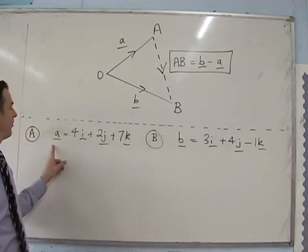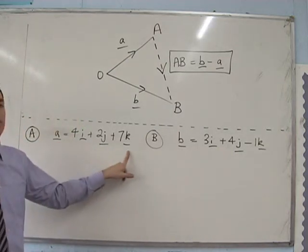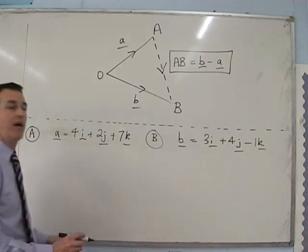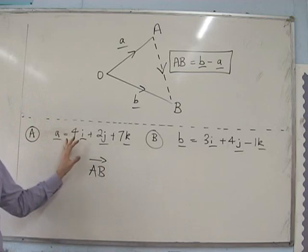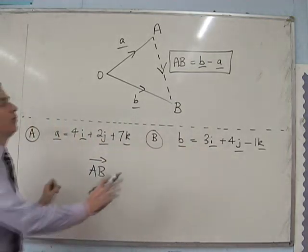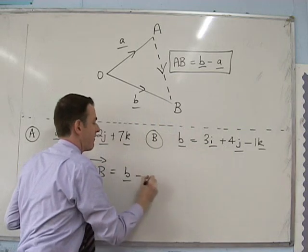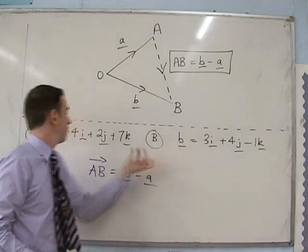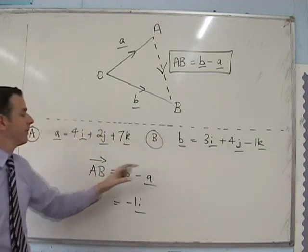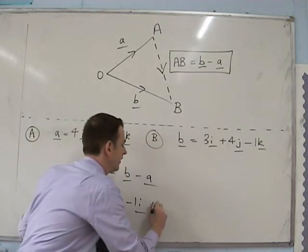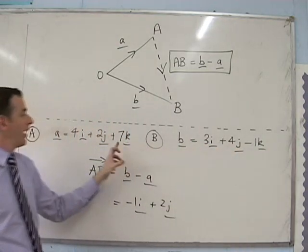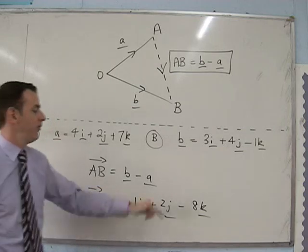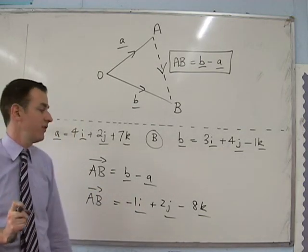So if I have two points, point a with position vector 4i plus 2j plus 7k, and point b with position vector 3i plus 4j minus 1k, how can I find out the vector between the two of them AB, which is telling you how to get from a to b? It's always going to be the opposite way round. So a to b is going to be the position vector of b take away the position vector of a. So 3 take away 4 is going to be minus 1i, 4j take away 2j is going to be plus 2j, and finally minus 1k minus 7k is going to be minus 8k. So the vector which takes you from a to b is going to be minus 1i plus 2j minus 8k.